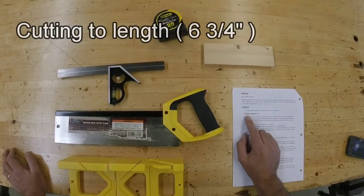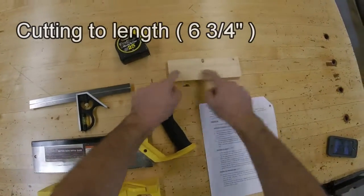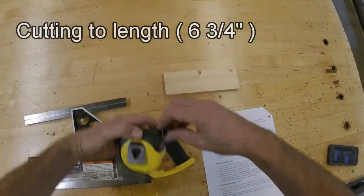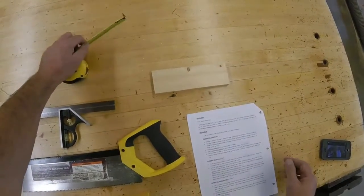Our first step is cutting to length, 6 and 3/4 inches long. In other words, we need to make this board, instead of almost 8 inches long, we need to make it 6 and 3/4.